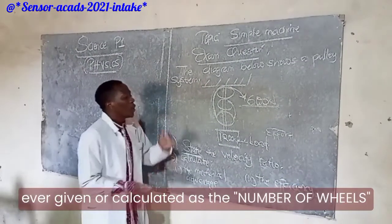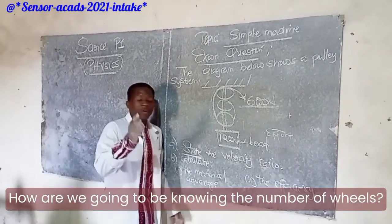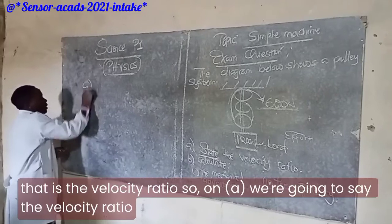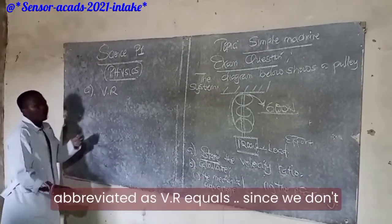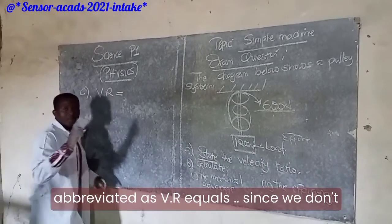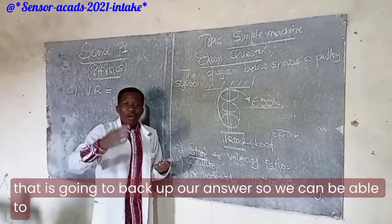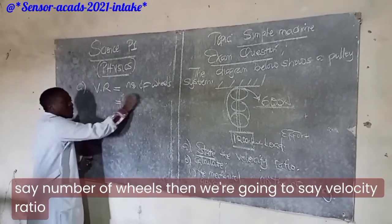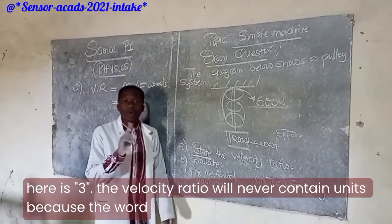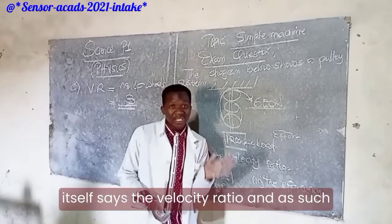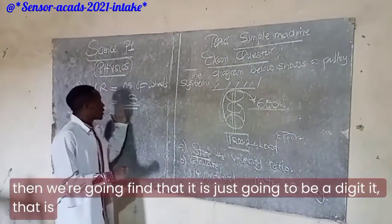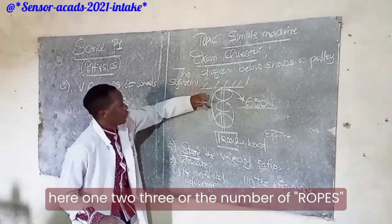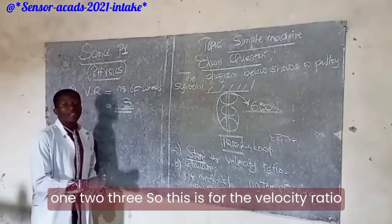Considering a pulley system, the velocity ratio is calculated as the number of wheels. We count the number of circles: one, two, three — that is the velocity ratio. So we say: Velocity Ratio (VR) equals the number of wheels, which is three. The velocity ratio will never contain units — it is just a digit corresponding to the number of pulleys.